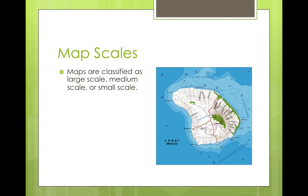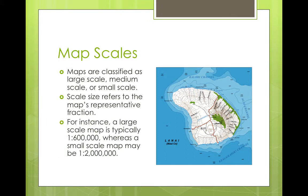Maps are classified as large scale, medium scale, or small scale. Scale size refers to the map's representative fraction. For instance, a large scale map is typically 1 to 600,000, whereas a small scale map may be 1 to 2 million.